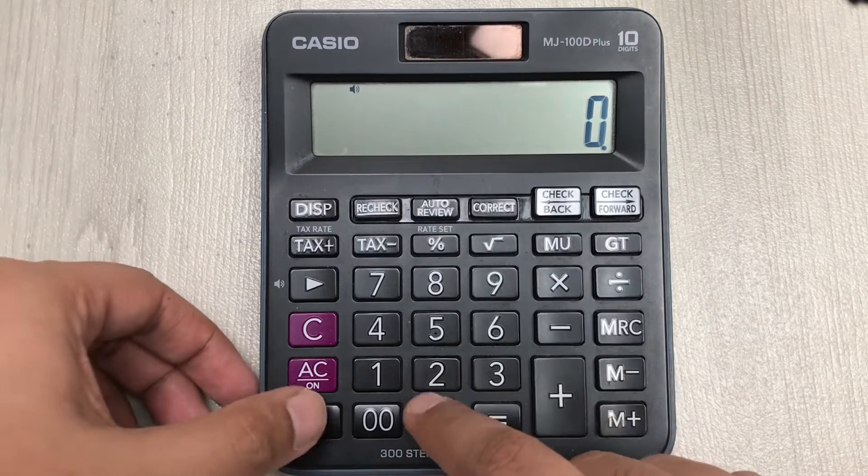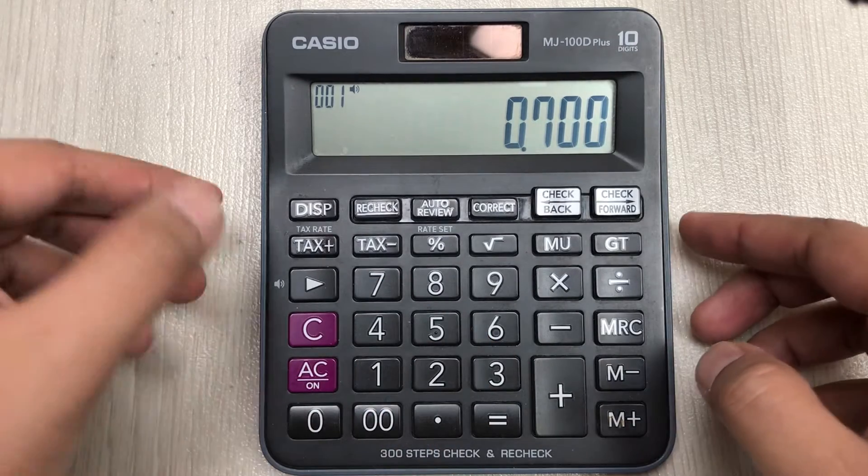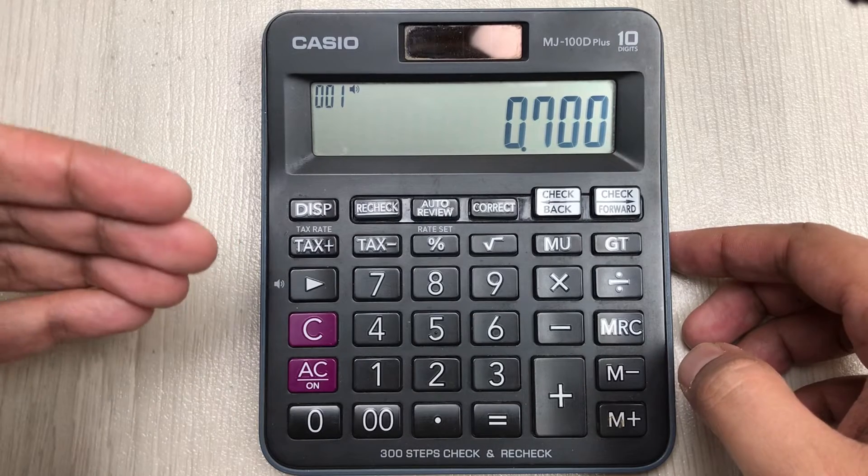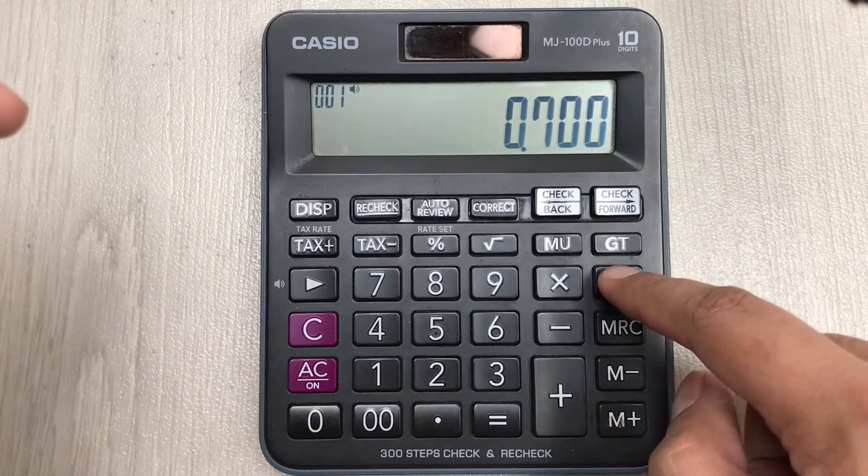In the first step, we will type 0.700. In the second step, you have to divide it with 227695.